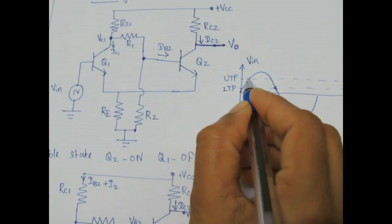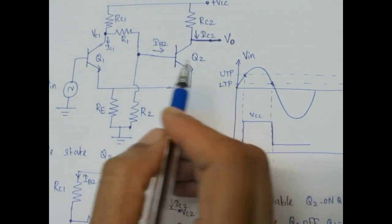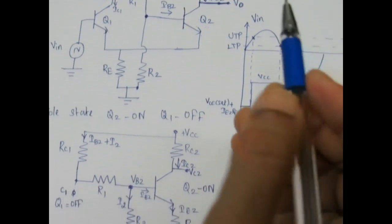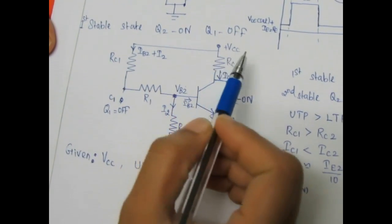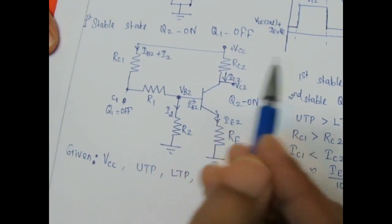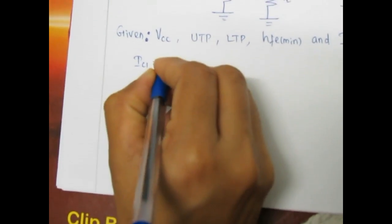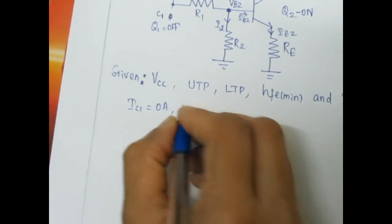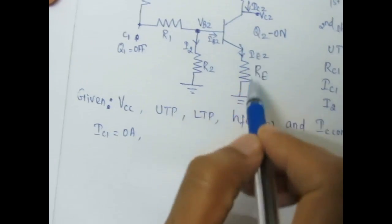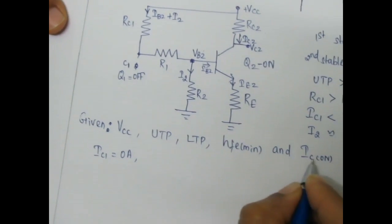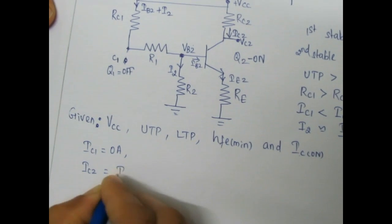The upper and lower threshold points of the sinusoidal signal act as true triggering pulses to the Schmitt trigger circuit. Considering the first stable state where Q2 is on and Q1 is off, the current flowing through Q1 is IC1 equal to 0 amperes. From this we will be able to find all the resistor values. IC2, the collector current of the on transistor, is given, so IC2 equals IC(on).